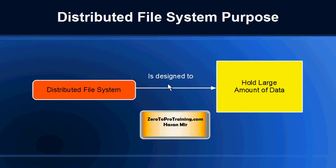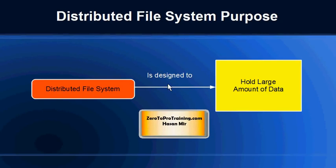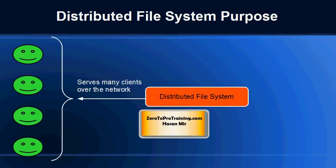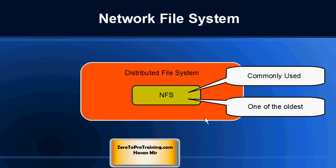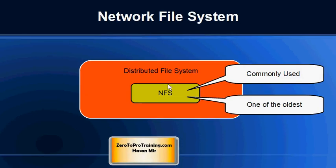Hadoop file system belongs to a category of file systems called distributed file systems. Distributed file systems were mainly created to serve two purposes: to hold large amounts of data and to serve multiple clients over the network. Now let's look into one of the most commonly used distributed file systems called network file system. It is one of the oldest and still commonly used. Let's try to answer the question why network file system was not sufficient to serve the needs and why there was a need to create Hadoop file system.